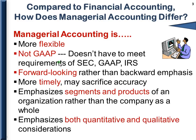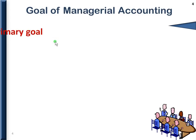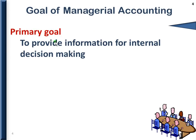In addition, managerial accounting looks at both quantitative considerations — which are the numerical dollar amounts — and qualitative considerations. Qualitative considerations are those touchy-feely things: how does it impact customers, how does it impact employees? The primary goal of managerial accounting is to provide information for internal decision-making.